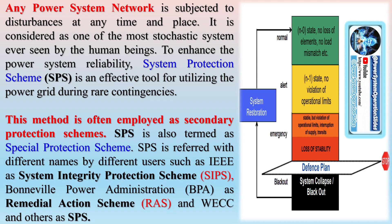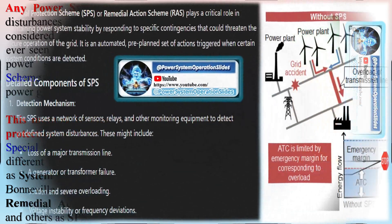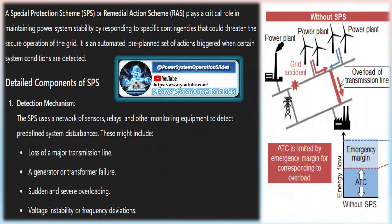SPS is referred to with different names by different users, such as IEEE's System Integrity Protection Scheme (SPS) and Remedial Action Scheme (RAS). SPS is defined as a protection scheme designed to detect a particular system condition known to cause unusual stress to the power system and to take some type of predetermined action to counteract the observed condition in a controlled manner.